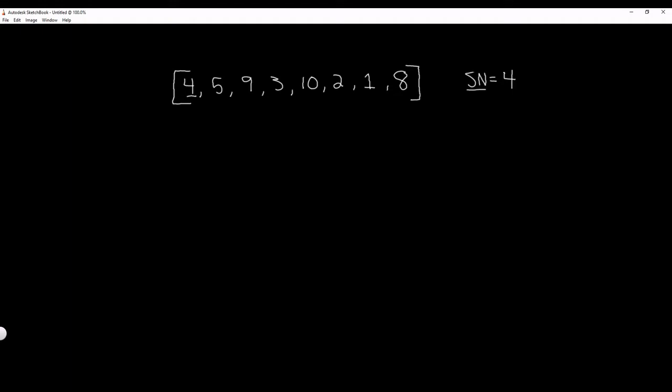Then we're going to iterate through each item in our list and check each number to see if it's smaller than our smallest number. If it is, we're going to update our smallest number variable to that number. Let me go through that with you and show you what that looks like.